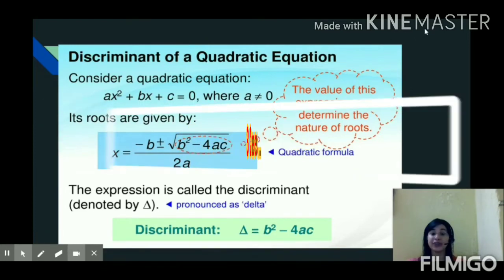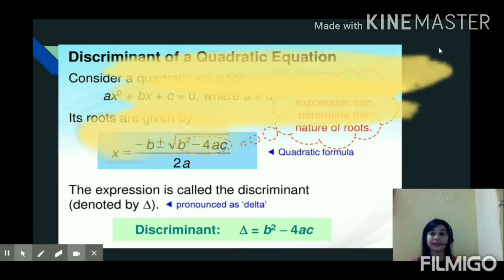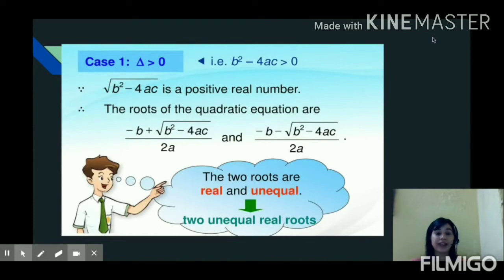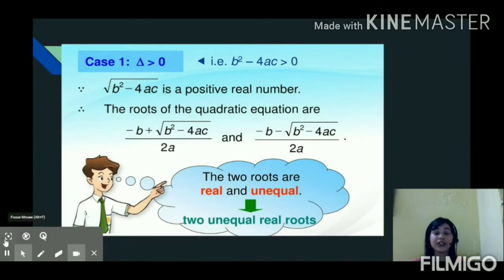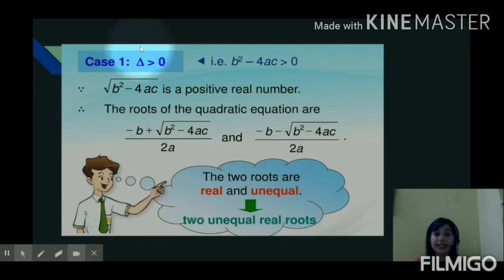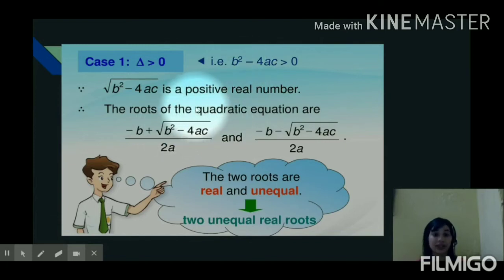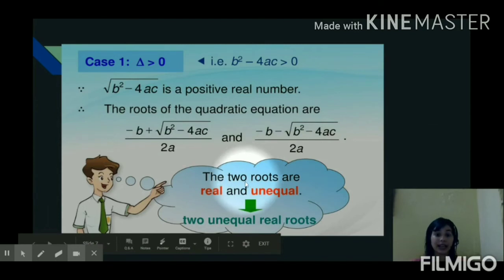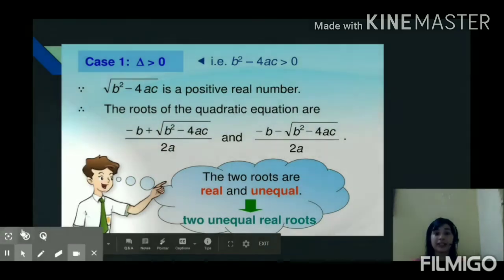Now we shall see three cases involving the nature of roots. Case one: when delta is greater than zero, that means the discriminant b squared minus 4ac is greater than zero. Whenever we have this condition, we are going to have two roots for our quadratic equation, and they will be real and unequal — that is, two unequal real roots. Let us take one example to support case one.